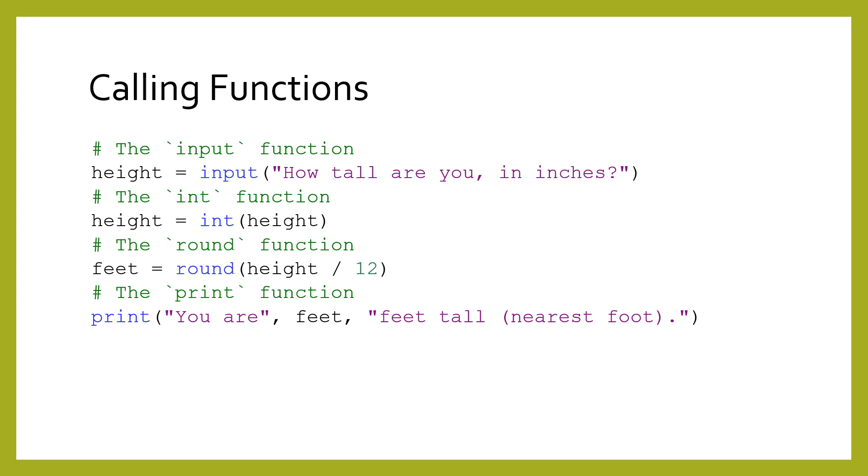You might think of a function as a mysterious box that you cannot see inside of. The arguments are slots on top of the box that you can put data into. Then, more data will come out of the bottom of the box, which we call the returned values.